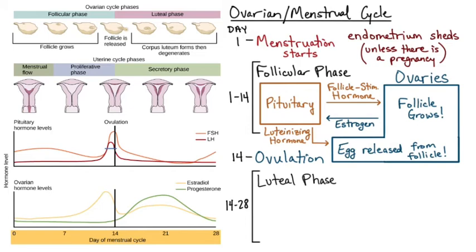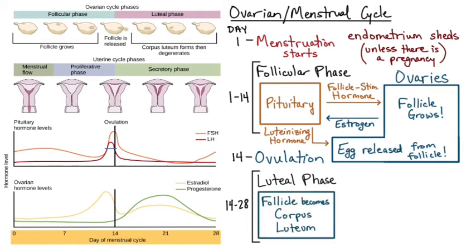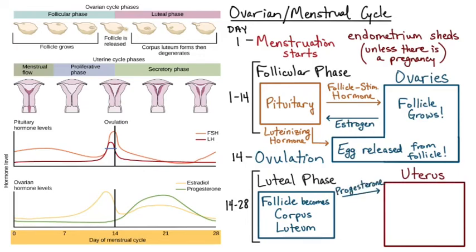Now let's look at the luteal phase — the second half of the ovarian cycle. It's called the luteal phase because the leftover supporting cells of the follicle, not the egg cell itself, form something called the corpus luteum. The corpus luteum stays in the ovary and its job is to keep producing progesterone, which it uses to communicate with the uterus.